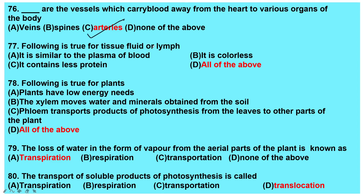Following is true for tissue fluid or lymph: it is colorless, and it is similar to plasma of the blood as it contains proteins — all of the above is the right answer. Plants have low energy needs. Xylem moves water and minerals from the soil, while phloem transports the products of photosynthesis from leaves to other parts.